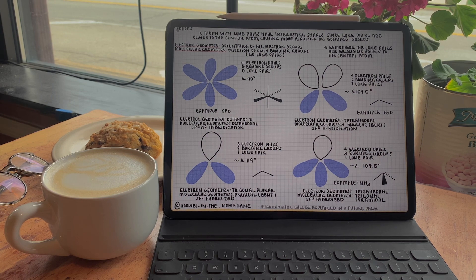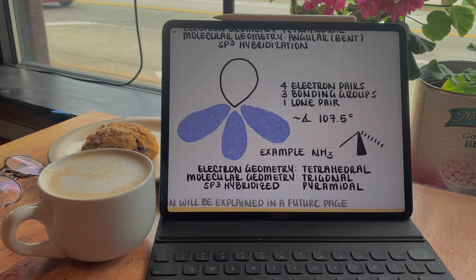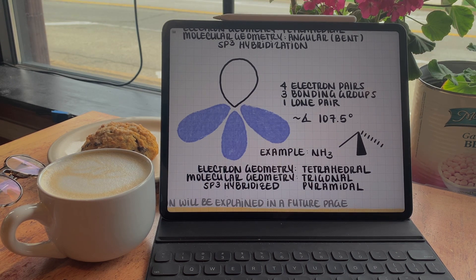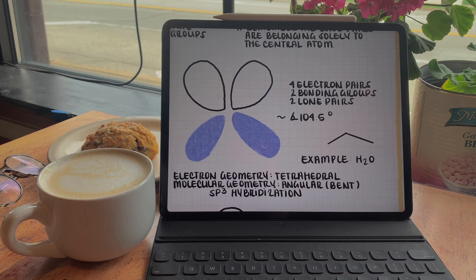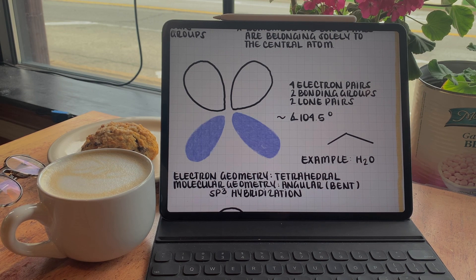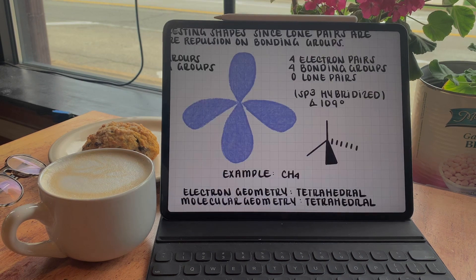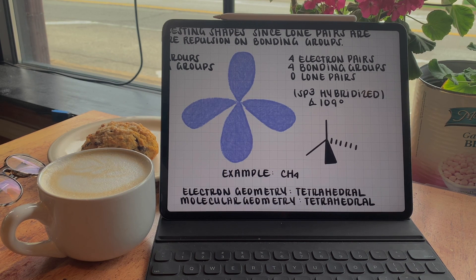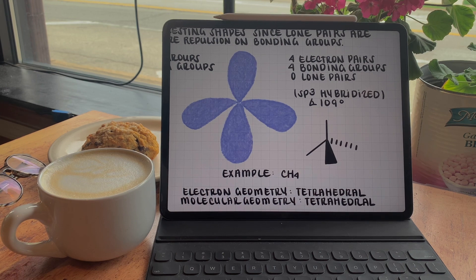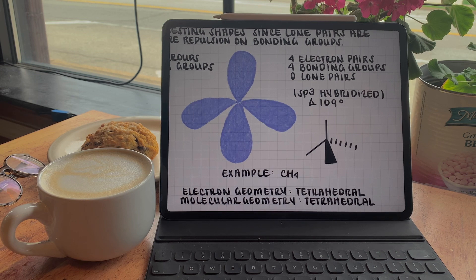Let's clarify some definitions first. Electron pairs or electron groups reflect any bond or lone pair around the central atom — any group that holds electrons. Bonding groups only refer to the number of other bonding atoms, while lone pairs refer to paired electron sets belonging only to the central atom. If we have three electron pairs, all from three bonded groups on a central atom, the central atom will arrange the groups in a trigonal planar geometry, separating each group at a 120-degree angle. If we have four groups around a central atom with zero lone pairs, the central atom arranges its groups in a tetrahedral orientation, with each group at approximately a 109.5-degree angle from each other.